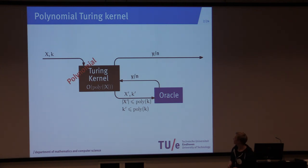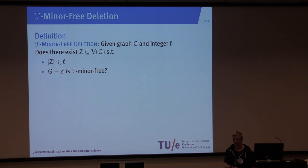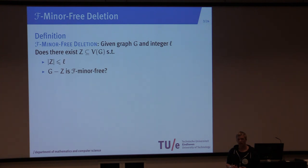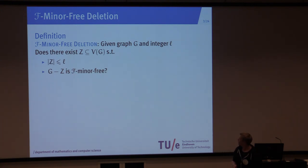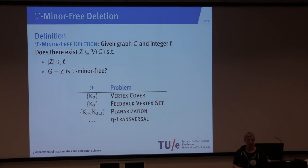So let's continue with F-minor-free deletion. For a fixed finite family of graphs F, the F-minor-free deletion problem asks: given a graph G and an integer L, can we make the graph G F-minor-free by deleting at most L vertices? This encodes a couple of known problems. For example, vertex cover and feedback vertex set can be encoded as an F-minor-free deletion problem by choosing a specific family of graphs F.